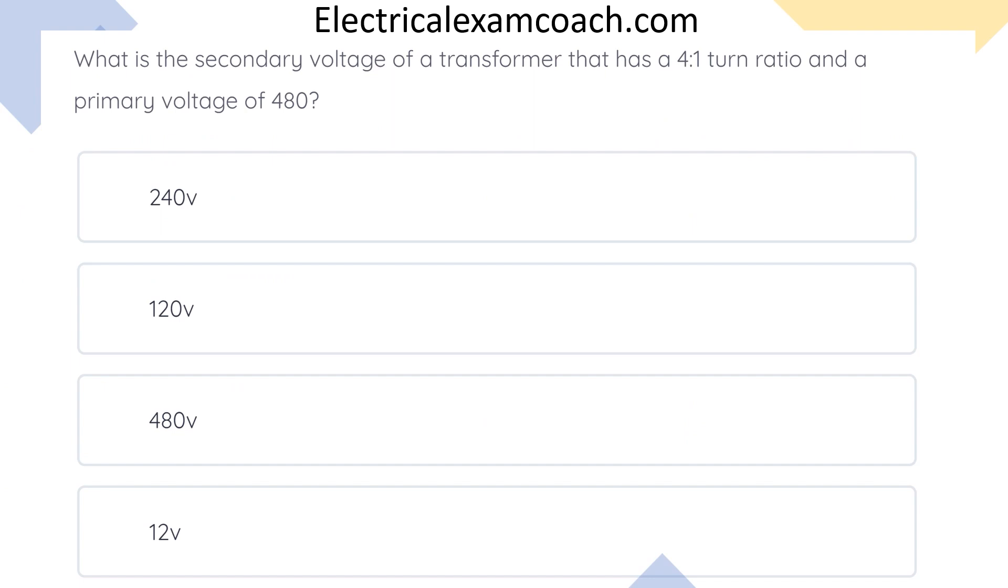What is the secondary voltage of a transformer that has a four to one turn ratio and a primary voltage of 480? The correct answer is 120.